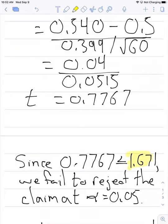If we look up the value for the t table at a level of significance of 0.05 and degrees of freedom of 60, we find 1.671.